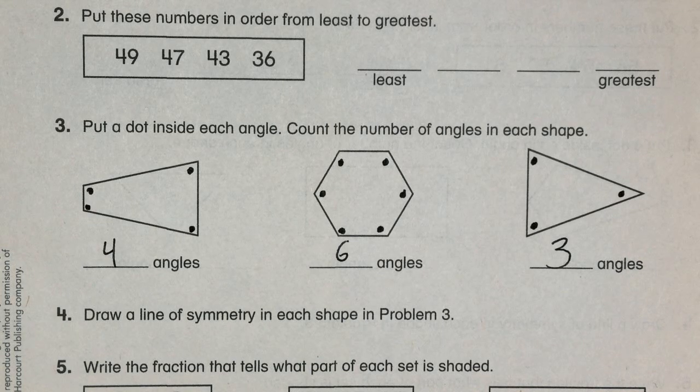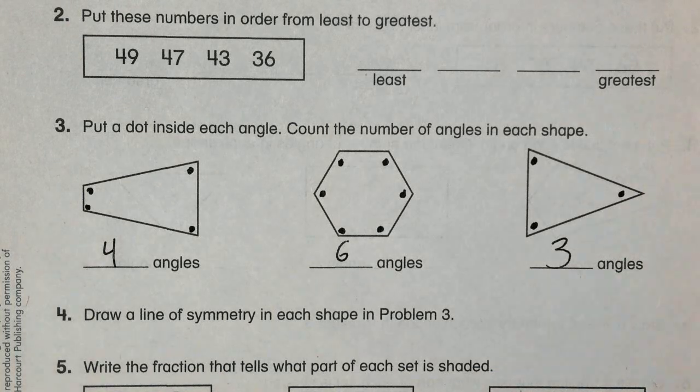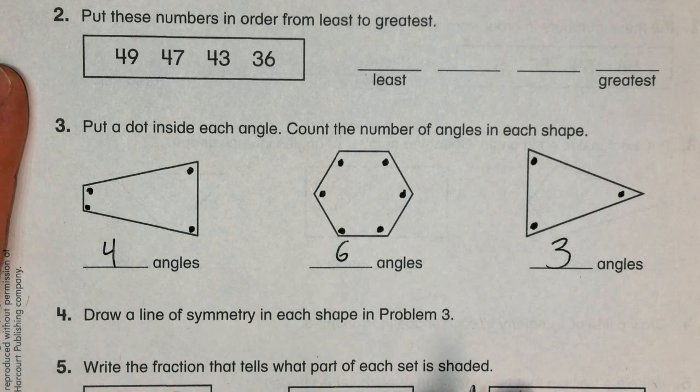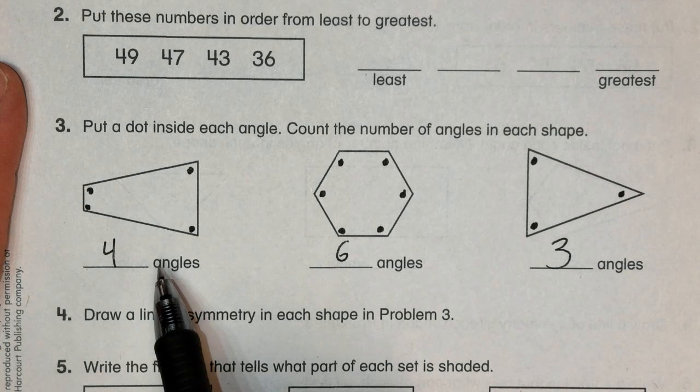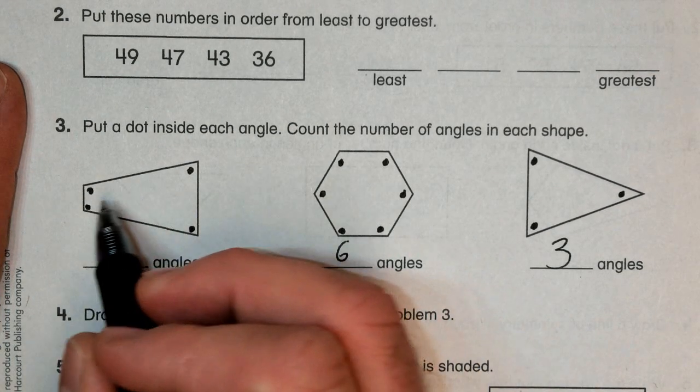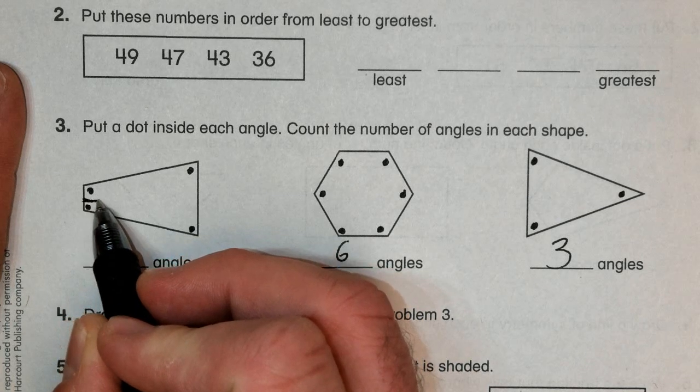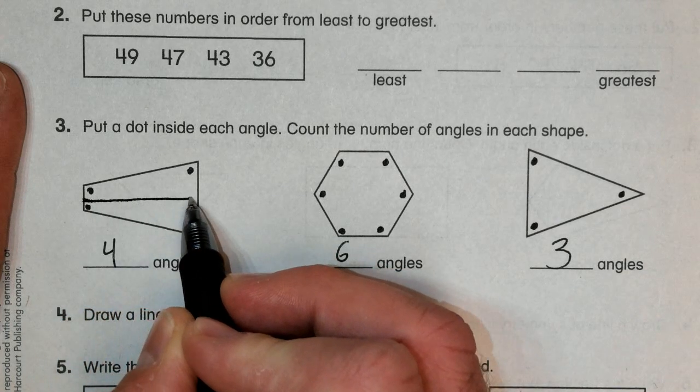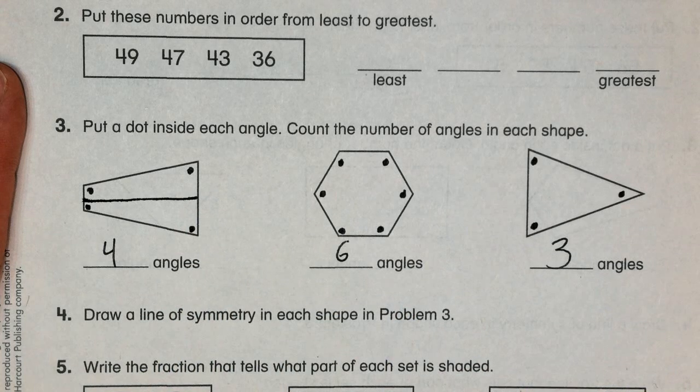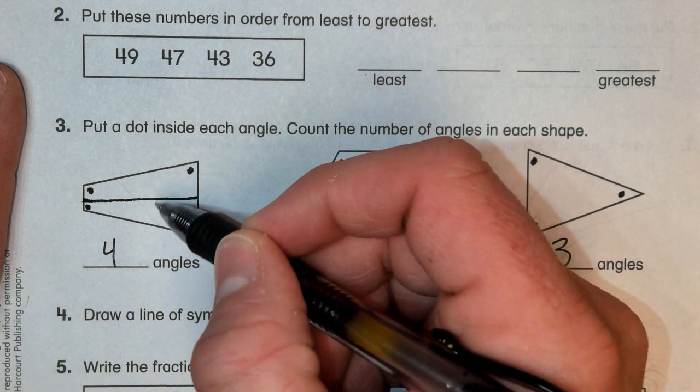And a line of symmetry is a line that goes through a shape that makes it equal on both sides. For example, this shape right here would have a line go from here through the middle to the other side. And it is equal on both sides.